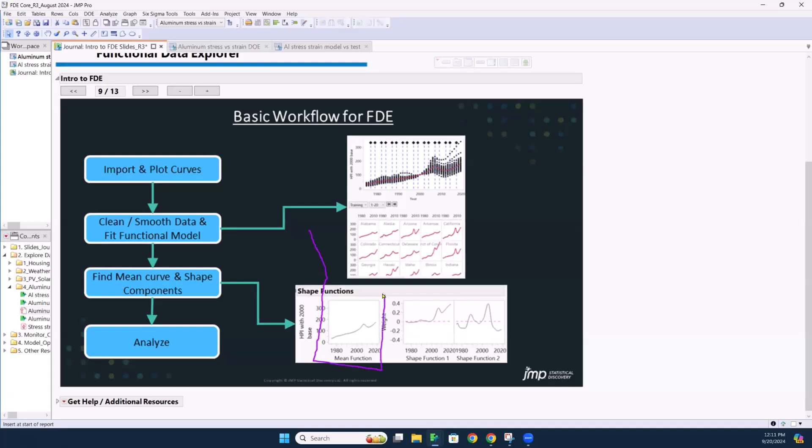And then what we end up with, if you look down here, we have a mean function. That's this red that you can kind of see in here. So it's a mean function of all the curves. And then you have these shape functions over here. And you can have one, two, three, as many shape functions as you want. And the basic concept is if we wanted to recreate this curve, we would take the mean function plus or minus portions of these shape functions across the x domain to reconstruct that curve. That's kind of the essential workflow of what JMP is doing behind the scenes.